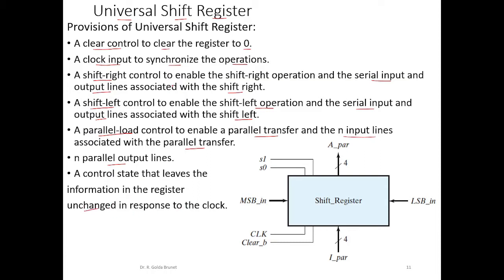These are the functions expected in a universal shift register. The block diagram shows the shift register with parallel input lines for parallel transfer, parallel output lines, and a common clock driving all the flip-flops. There is also a clear input to clear the register to 0, a shift-right serial input, a shift-left serial input, and two select lines S0 and S1 which determine whether the operation is shift-right, shift-left, parallel load, or retain. One of these four operations is chosen based on the values of S0 and S1.